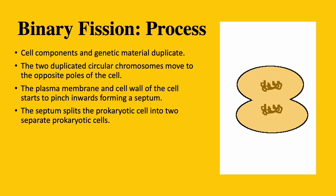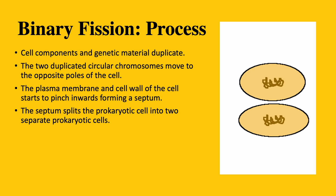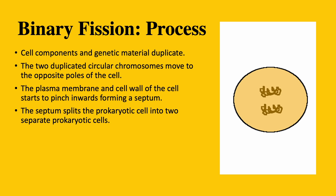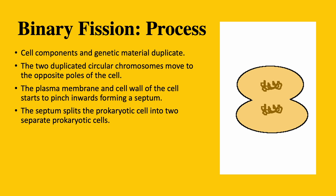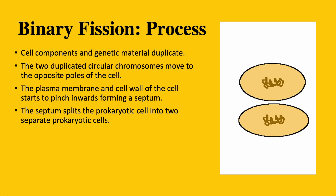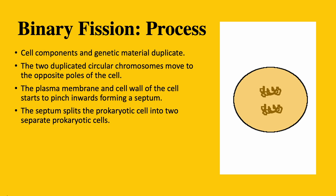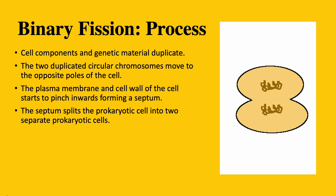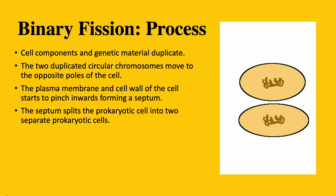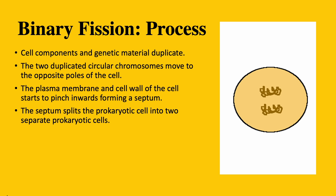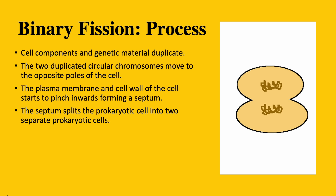This is where the new cell wall starts being made. Finally, the septum splits the prokaryotic cell into two, creating two new daughter cells, each acting as its own prokaryotic cell. This is how binary fission functions.